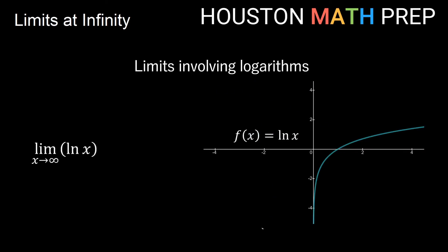Looking at limits involving logarithms: if we graph y equals ln x, we see a graph that increases without bound as we head to the right. However, we can't approach negative infinity on this graph because logarithms are not defined for zero or negative values — only positive x values are allowed. So we only look at the limit as x approaches positive infinity, and since we go up and to the right forever, we get a positive infinite limit for y equals ln x.